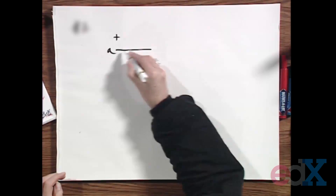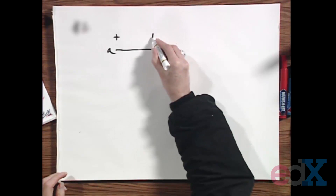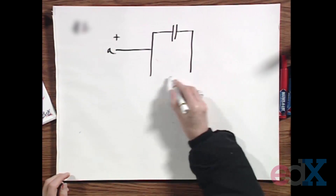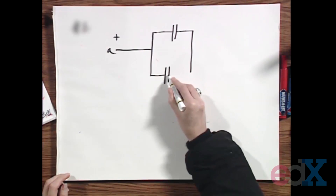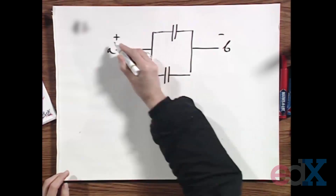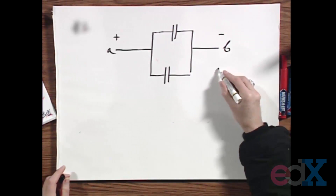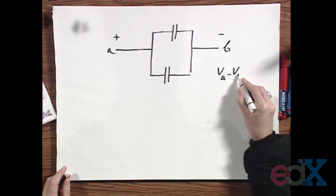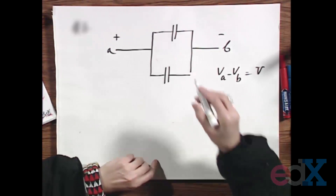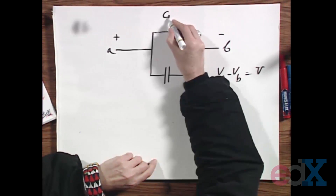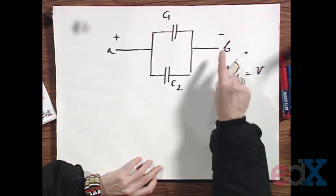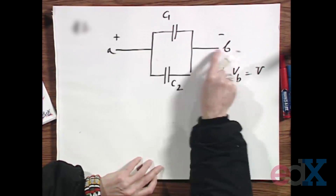If we have a set of parallel capacitors, with point A and point B, and V_A minus V_B — let's call it V — higher here than there. This capacitance is C1 and this capacitance is C2. They both see the same voltage.